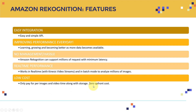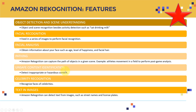Low cost — you only pay per image, video time, and storage, with zero upfront cost. The features also include object detection and scene understanding: object and scene recognition, alongside activity detection such as detecting a cat drinking milk.